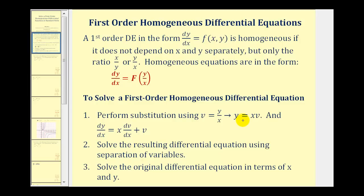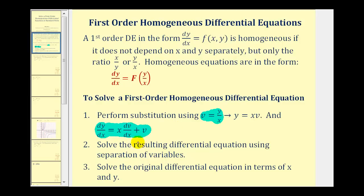So dy/dx is going to be equal to x times dv/dx plus v times the derivative of x, which is just one. So for the substitution, we'll use v equals y divided by x, and dy/dx equals x times dv/dx plus v. Once we perform this substitution, we can solve the resulting differential equation using separation of variables, and then solve the original differential equation in terms of x and y.